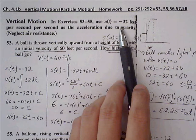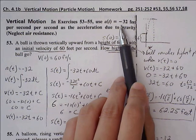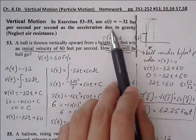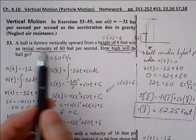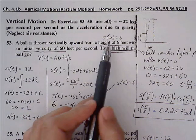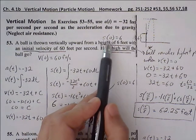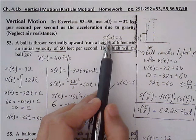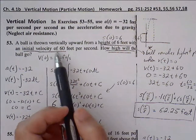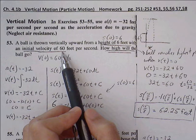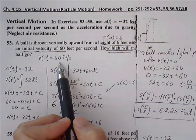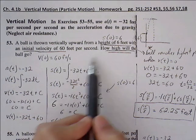So we're given that a(t) is negative 32 feet per second per second, acceleration due to gravity. A ball is thrown vertically upward from a height of 6 feet, so we know s₀ equals 6, our initial position is 6, with initial velocity of 60 feet per second, so V₀ is 60 feet per second. How high will the ball go?